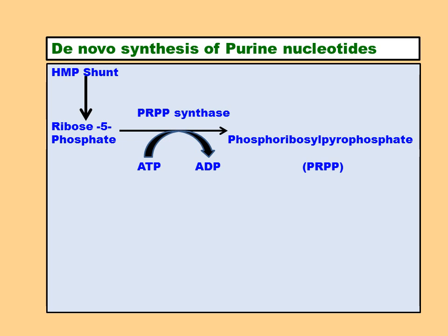Ribose-5-phosphate, in the presence of the enzyme phosphoribosyl pyrophosphate synthase, is converted to phosphoribosyl pyrophosphate. The coenzyme required is ATP, which is converted to ADP. This is the preparatory step in de novo synthesis of purine nucleotides. De novo is the synthesis of a new compound from amphibolic intermediates — products of both anabolic and catabolic metabolic reactions.